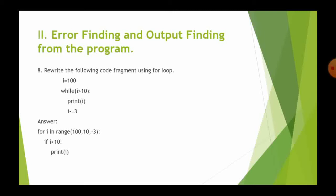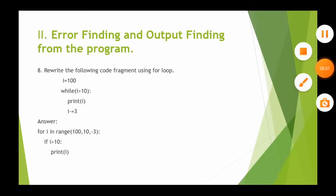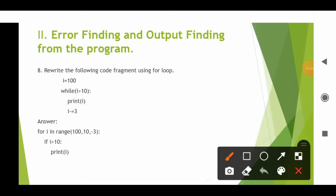Question 8: rewrite the following code fragment using a for loop. The given code uses a while loop: i equal to 100, while i greater than 10, print i, then i equal to i minus 3. The value starts at 100, which is greater than 10, so it prints 100, then 97, and continues until the condition becomes false.